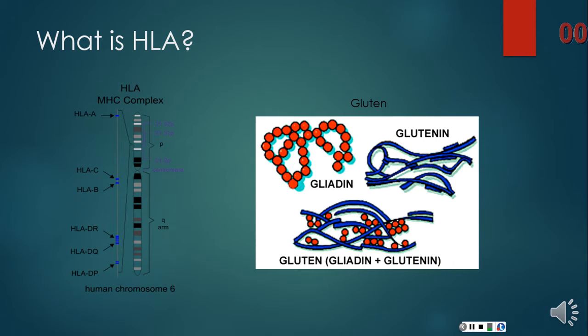Each immune system is different. Therefore, they have a wide range of HLA that can be found in the body. Diseases are also common amongst some HLA, as more than 100 diseases have been associated with different alleles of HLA genes.